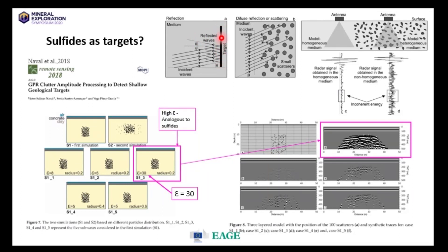If we zoom in, sulfide grains and minerals within those grains have all different orientations, with crystal faces in different orientations. Because of this irregularity, some of the energy is transmitted through to the next layer where it can be reflected, some is reflected off into the country rock, and importantly some is reflected back to the surface where it can be recorded by the receiver antenna.